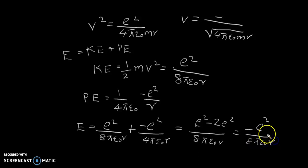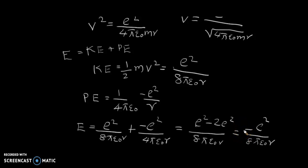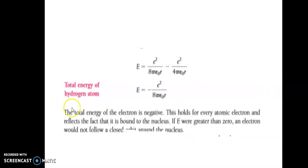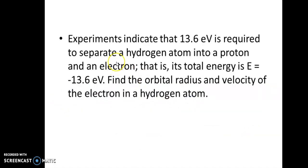The total energy is negative, which means the electron is bound to the atom. If the energy were positive, the electron would be free (unbound). Experiments indicate that 13.6 electron volts is required to separate the hydrogen atom into a proton and an electron — so the ionization energy is 13.6 eV, and the total energy is −13.6 eV.